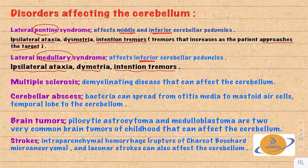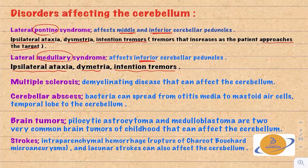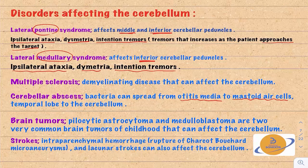Multiple sclerosis is a demyelinating disease that can affect the cerebellum; manifestations depend on which part is affected. Cerebellar abscess is caused by bacteria spreading from infections like otitis media. The infection spreads to the mastoid air cells, then to the nearby temporal lobe, and finally can reach the cerebellum.